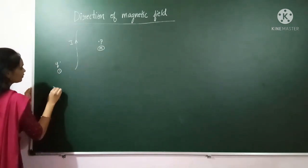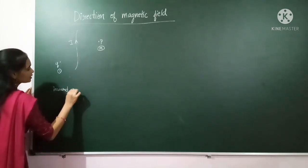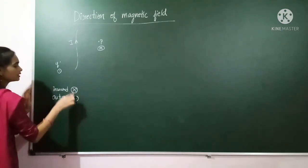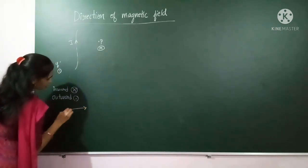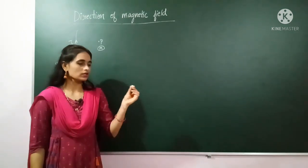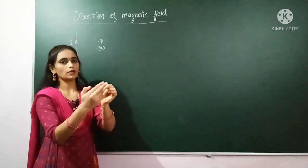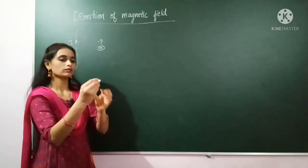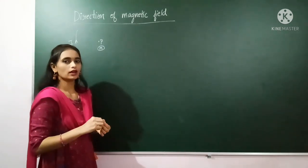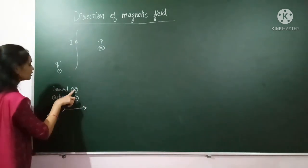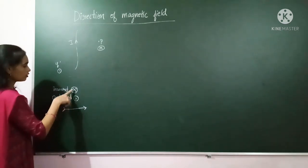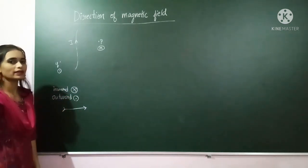Inward magnetic field is represented by a cross and outward by a dot. The reason: consider an arrow — it has a front tip and a back end. If the arrow is coming towards you, you see the front tip, which looks like a dot. If the arrow is going inward into the board, you see the back portion, which we represent as a cross. That is why we use cross for inward and dot for outward magnetic field.